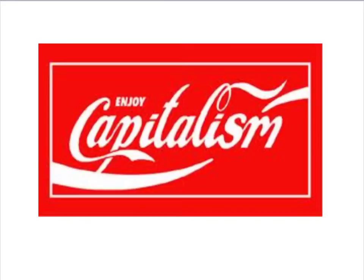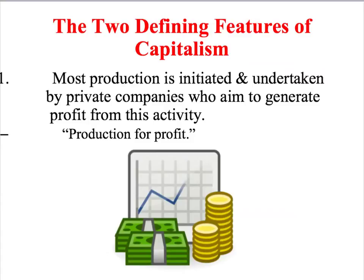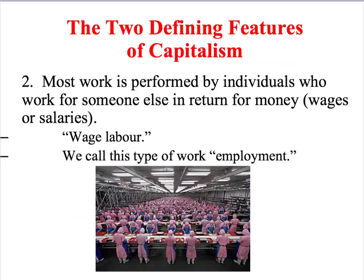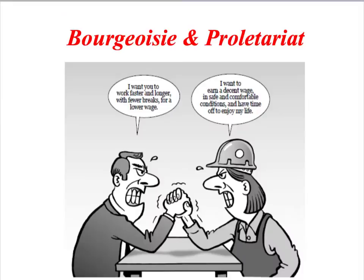A capitalist economy has two really important distinctive features. Firstly, within capitalism, most production of goods and services is initiated and undertaken by private companies rather than the government, and these private companies are aiming to generate as much profit as they possibly can. Secondly, because private companies are owned by a relatively small minority of the population, the rest of the population have to sell their labour in order to make a living. Marxists argue that this type of economic system creates two main social classes called the bourgeoisie and the proletariat.